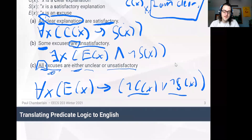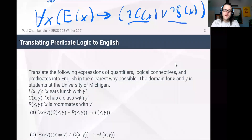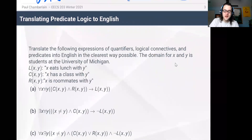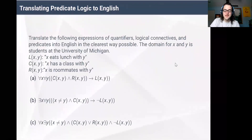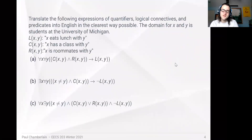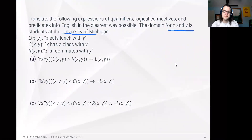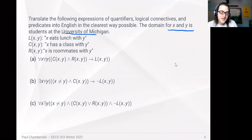Now let's talk about translating from predicate logic into English. Suppose we're talking about students at U of M, with X and Y, and we're saying L(X,Y) means X eats lunch with Y, C(X,Y) means X is in a class with Y, and R(X,Y) means X is roommates with Y.